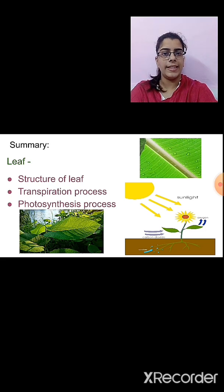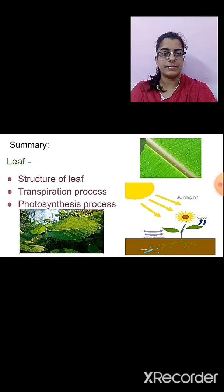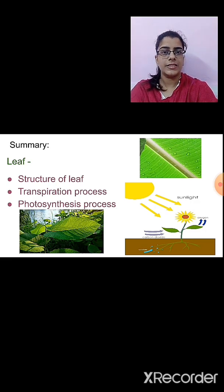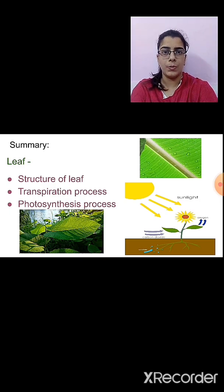We studied about the leaf. We saw the structure of the leaf — what does the leaf consist of. The leaf consists of a petiole and lamina. We can see the veins on the leaf and the midrib. The part of the leaf that is attached to the stem is known as petiole. The broad green portion of the leaf is known as lamina.